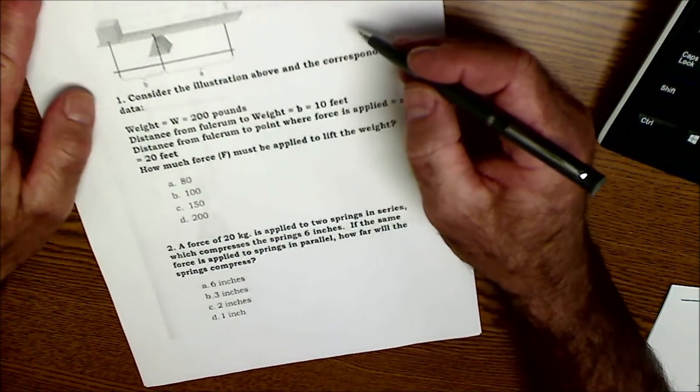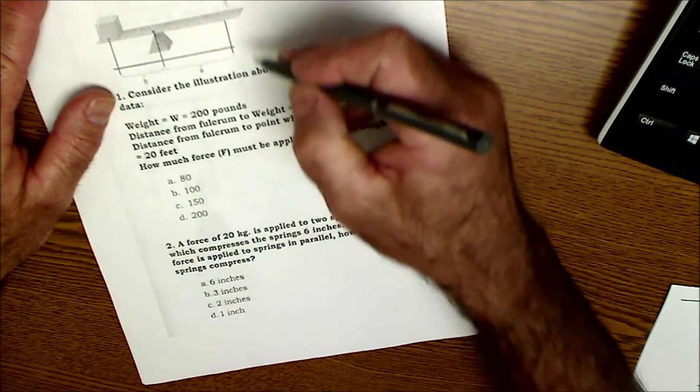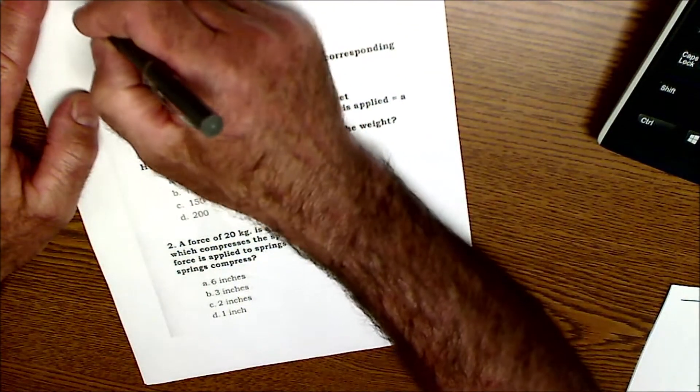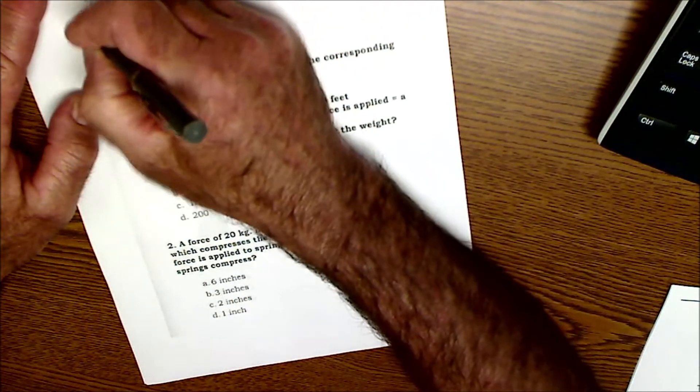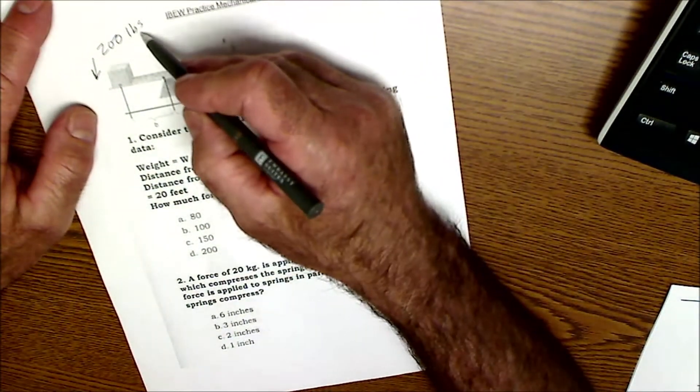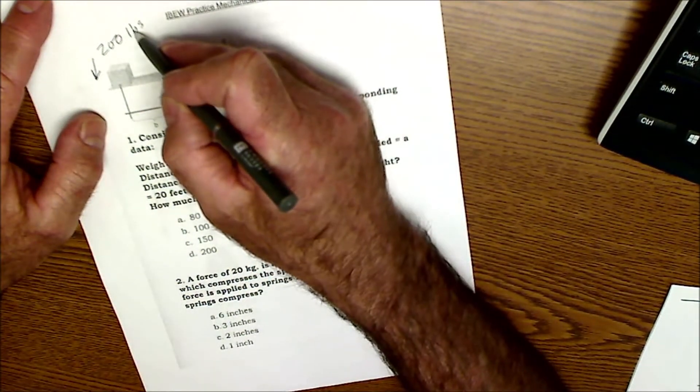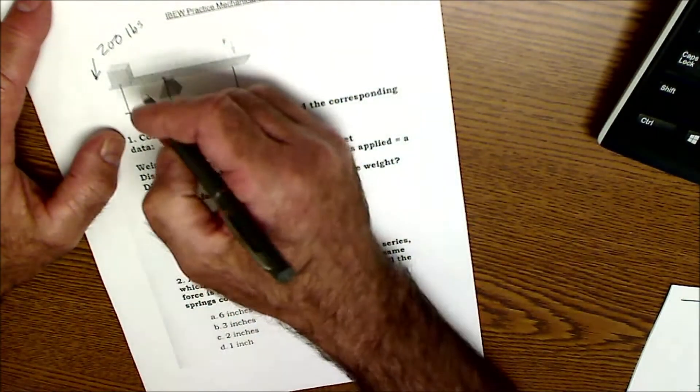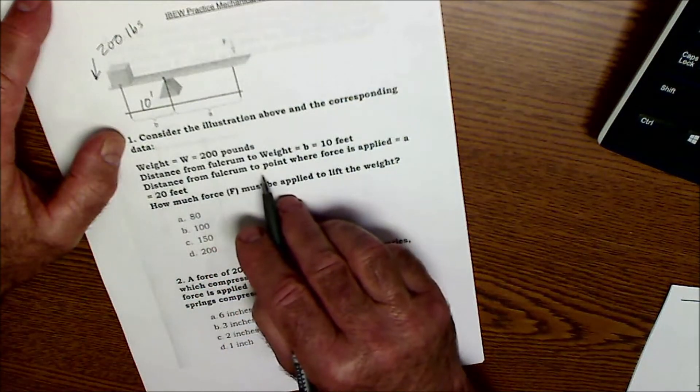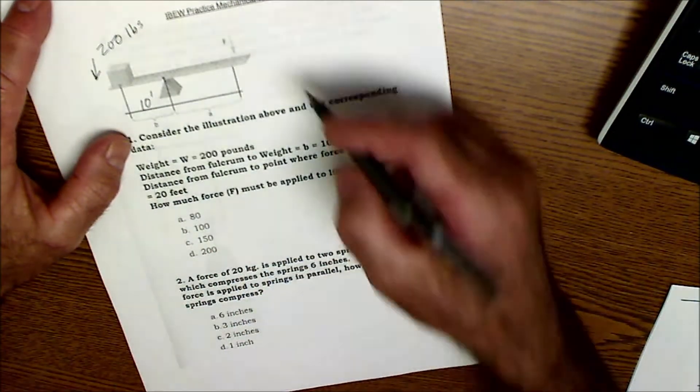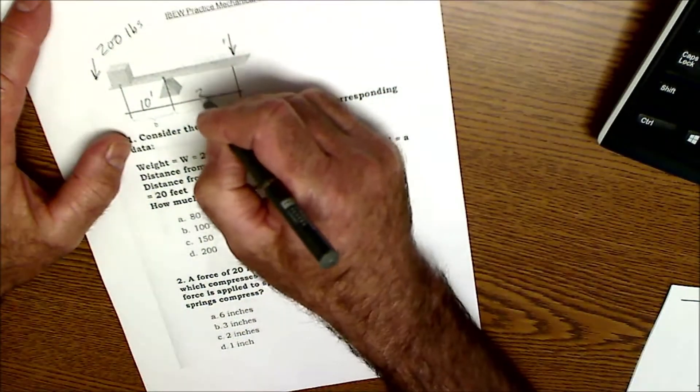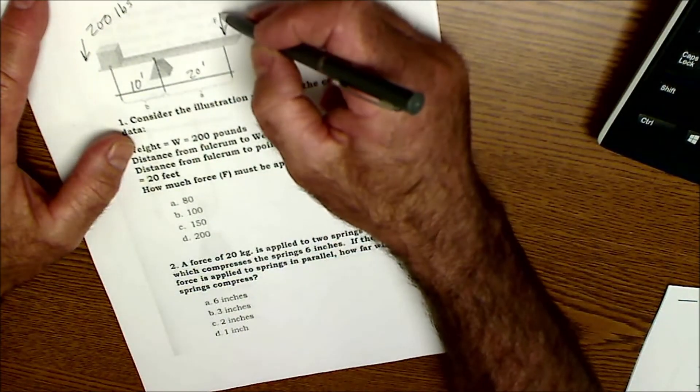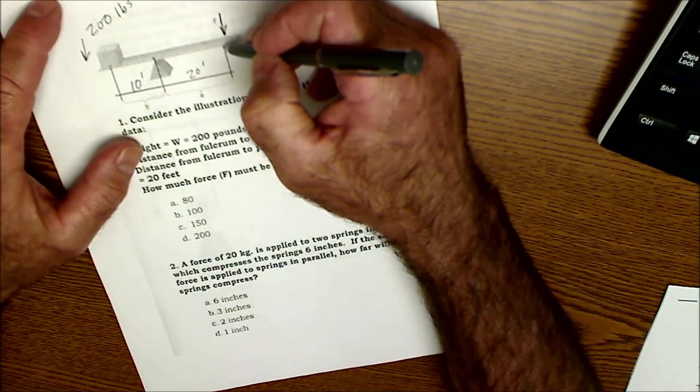Okay, so the first thing I'm going to do on this problem is take all of these sentences and transfer it to the diagram. So look at the illustration above, the weight is 200 pounds. So this is 200 pounds pushing down right here. I'd really keep track of my units. A lot of the times you have to convert units, so I'm going to write my units down there. The distance from the fulcrum to the weight B is 10 feet. The distance from the fulcrum to where the force is applied, here's the force getting applied, is 20 feet. So it's twice as long.